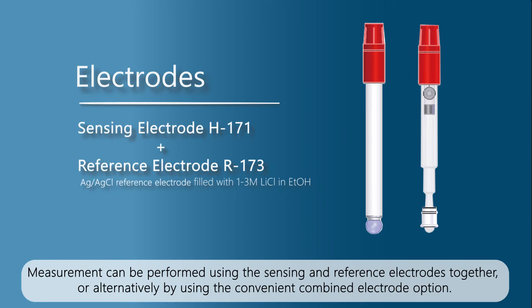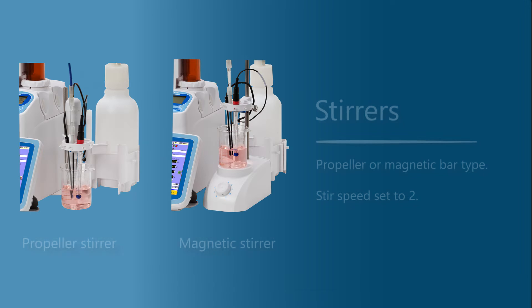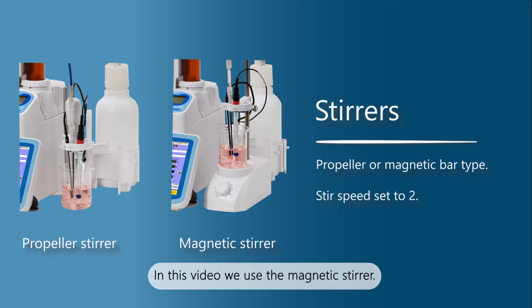Measurement can be performed using the sensing and reference electrodes together or alternatively by using the convenient combined electrode option. In this video we will be using the C173 combined electrode and the magnetic stirrer.